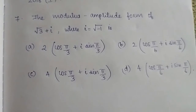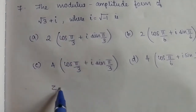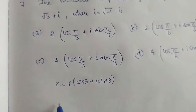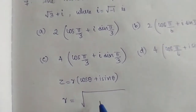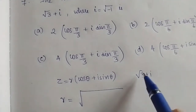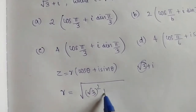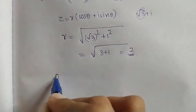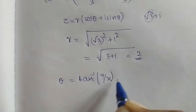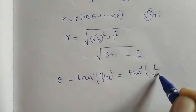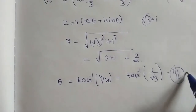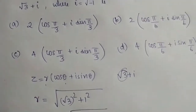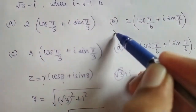Next question: write the modulus-amplitude form, that is, the polar form. z equals r into cos theta plus i sin theta. For the complex number root 3 plus i, x equals root 3 and y equals 1. The modulus r equals root of 3 squared plus 1 squared equals root of 4 equals 2. Theta equals tan inverse of y by x, so tan inverse of 1 by root 3 equals pi by 6. So r equals 2 and theta equals pi by 6. Option B is the right answer.